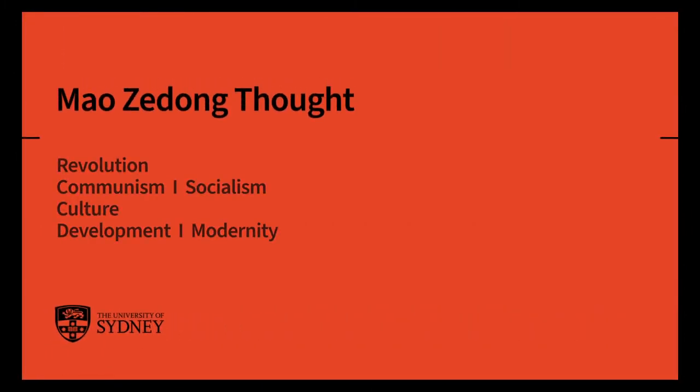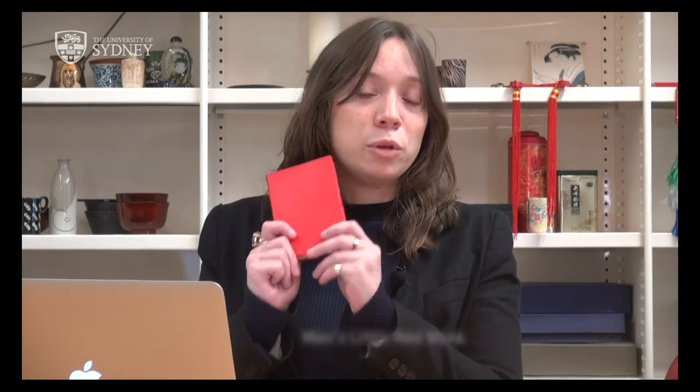To understand Mao's aims in launching the Cultural Revolution, one place to start is with Mao Zedong Thought — that is, Mao's ideas about revolution, communism, socialism, culture, development, and modernity — the ideas he expressed in his body of writing from the 1920s all the way up to his death in 1976. In English we often use the term 'Maoism' to refer to Mao Zedong Thought. One great place to start is with Mao's Little Red Book.